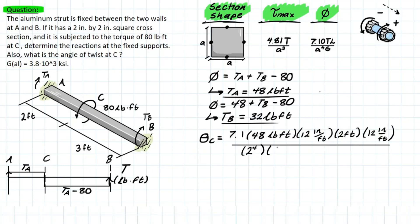All over our geometric properties, which is going to be 2 to the power of 4. And then the shearing modulus, which is given to us in KSI, so 3.8 times 10 to the 3. We're going to calculate this in terms of pounds per inch squared. All of these terms are going to cancel out and you will be left with an angle of twist at C equal to 0.0161 radians.